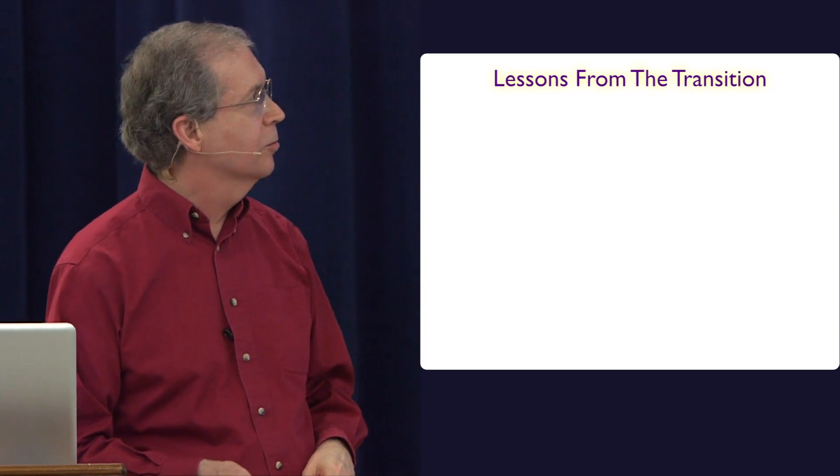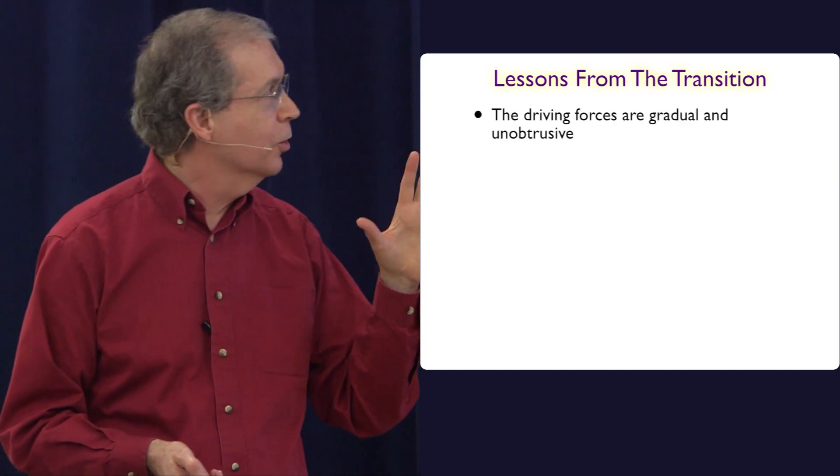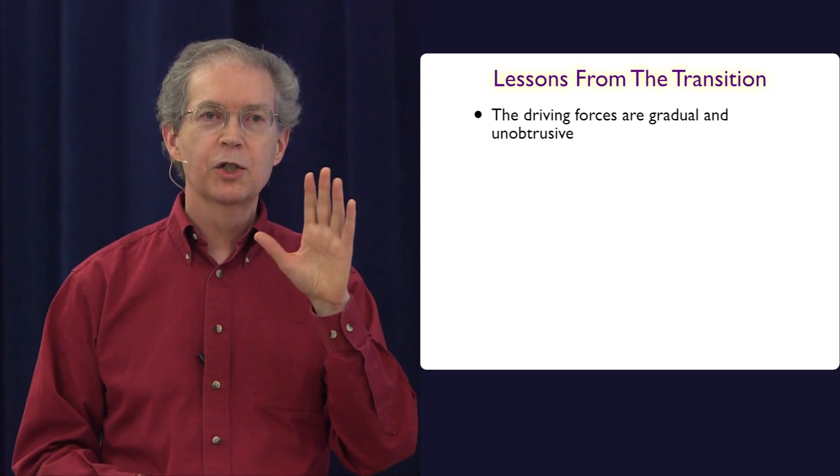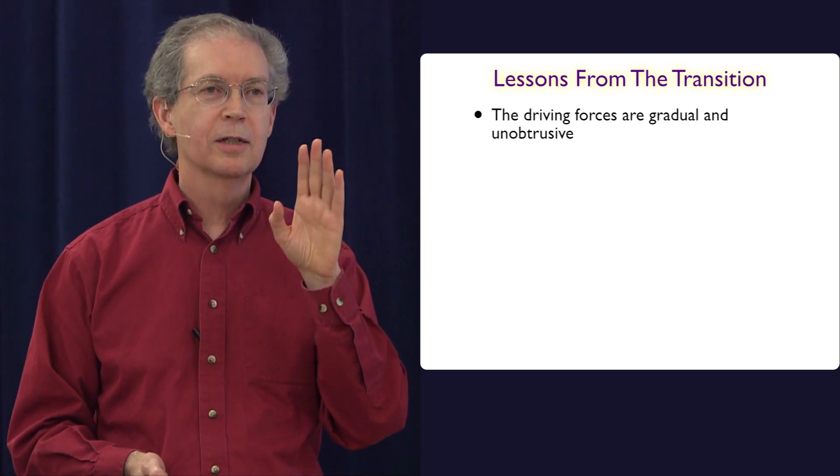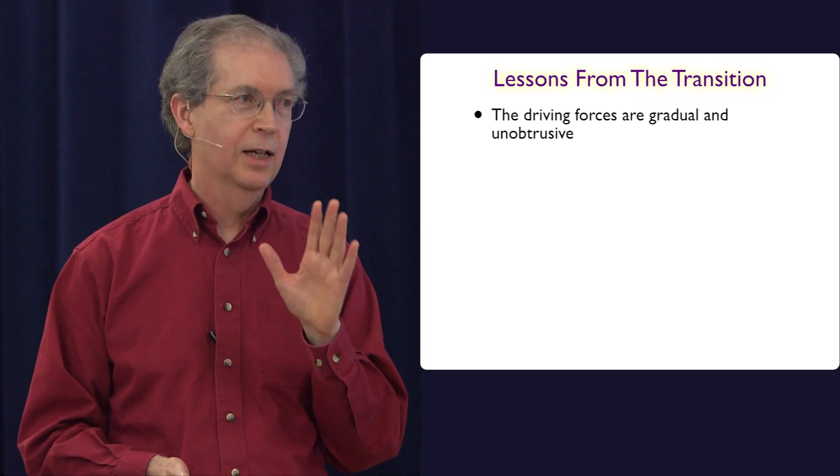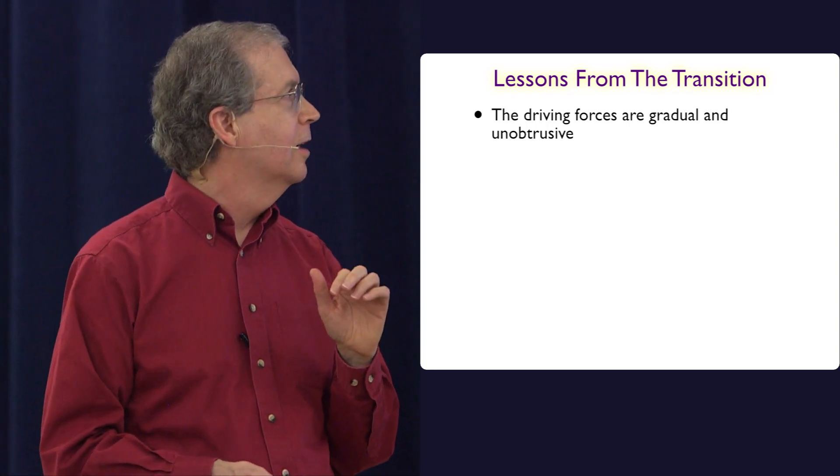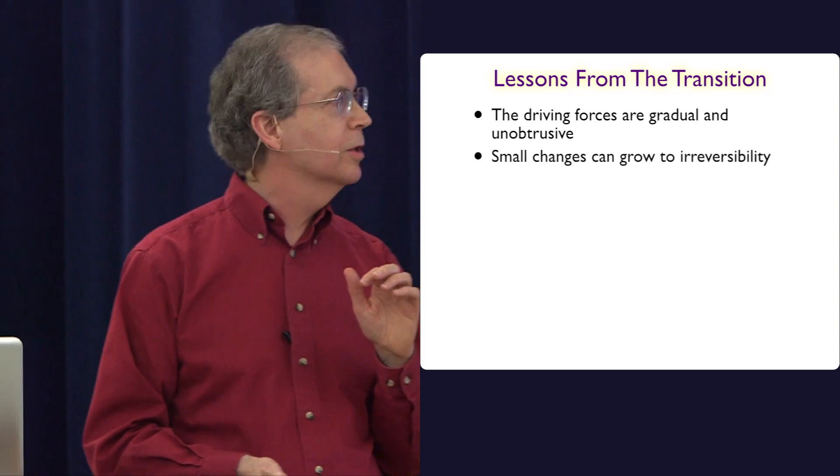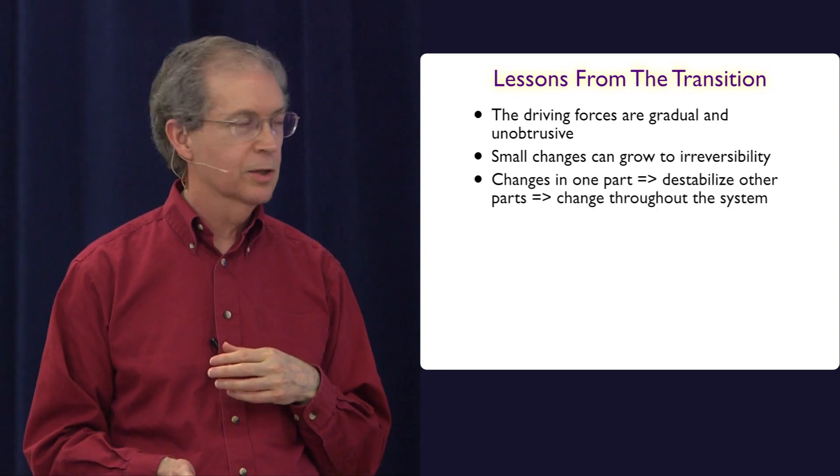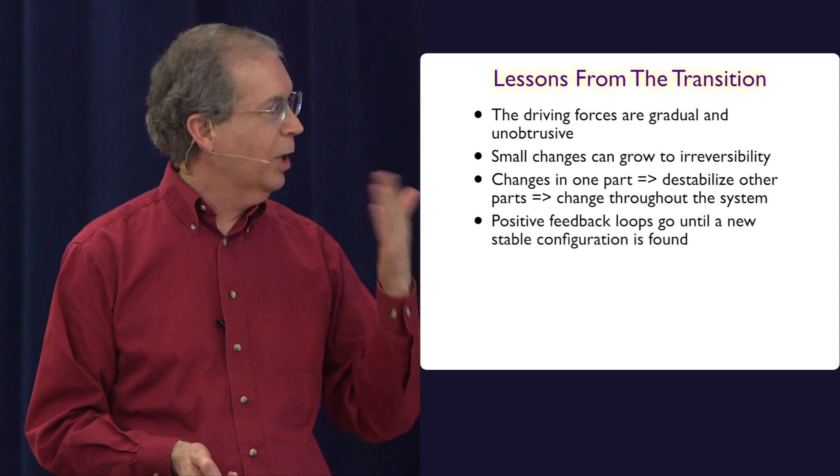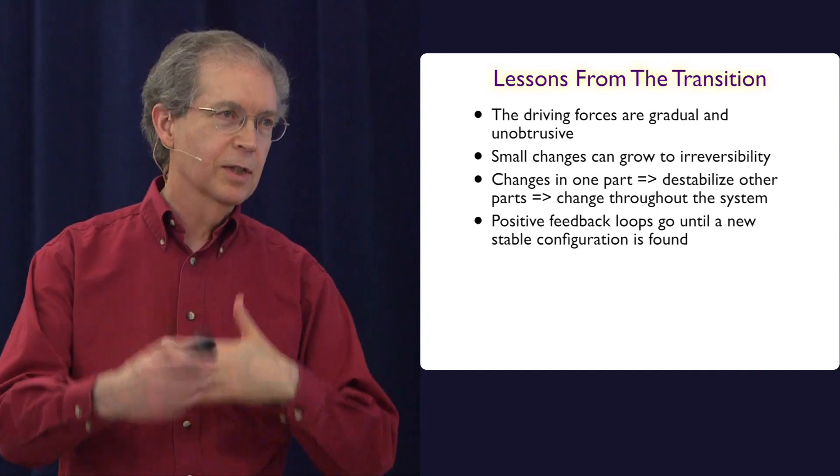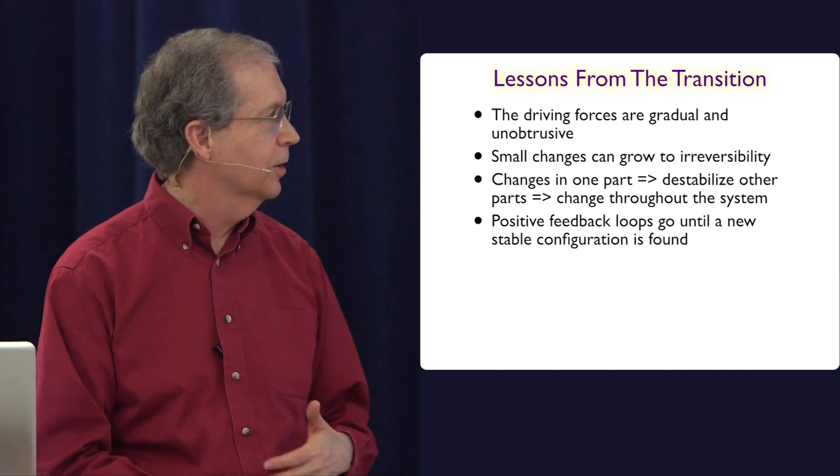So what are some of the lessons that we can draw from this? First of all, the driving forces are gradual and unobtrusive. I want to say that the things that shape history and culture are not the same as what makes news. And that's a lesson to apply now. Small changes can grow to irreversibility. Changes in one part of the system can destabilize other parts. And it's powered by positive feedback loops that will go until they somehow, the system gets to a place where it's now in a new stable configuration.